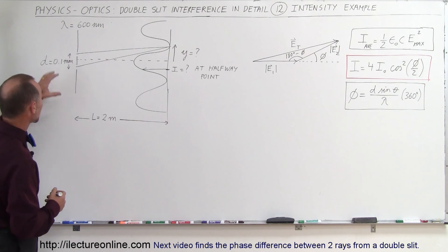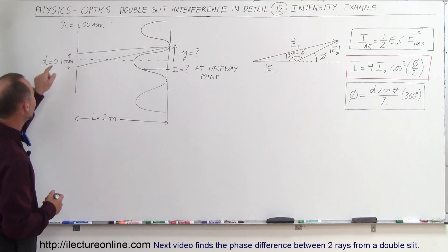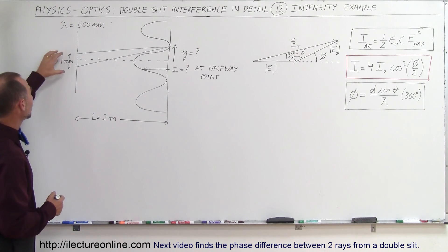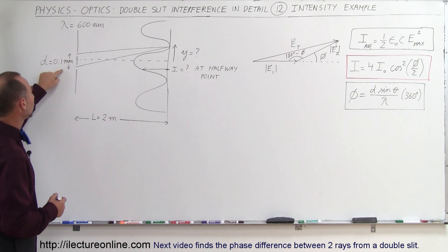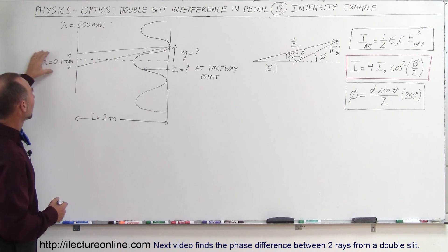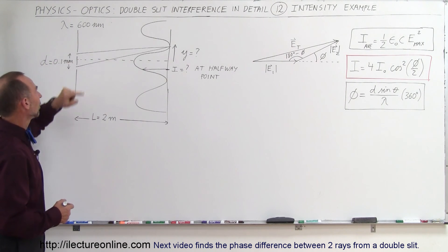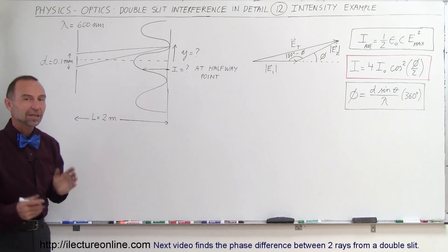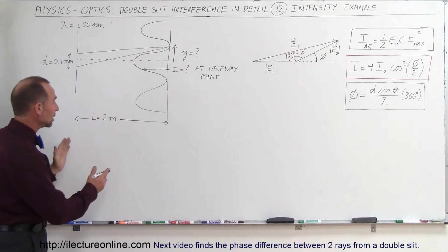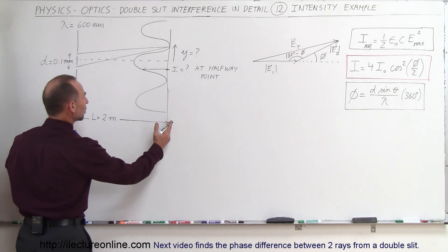So what we have here is a double slit. The distance between the slits is 0.1 millimeter, light shines through it at a wavelength of 600 nanometers, and there's a screen 2 meters away.